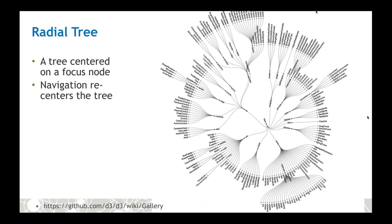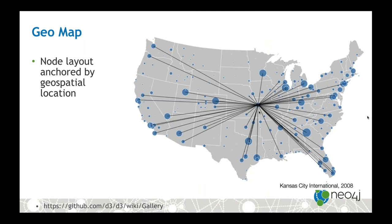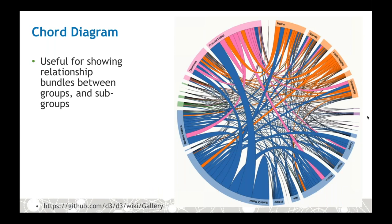Bundling — whether node clustering or edge bundling — aggregates parts of the graph, making a large graph smaller. There's a cycle of complexity: as you increase the scale from tiny to small to large to giant, complexity increases dramatically and information density drops. To restore information density you head back down the scale by applying aggregation techniques — clustering to go from giant to large, edge bundling and more clustering to get down to small, and possibly compressing all the way back to a tiny graph.